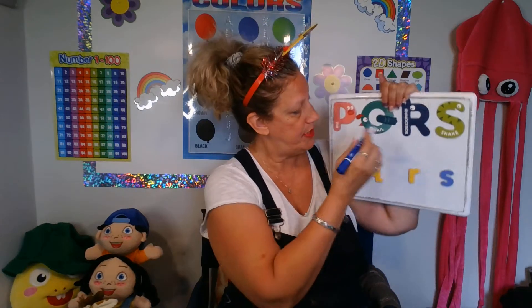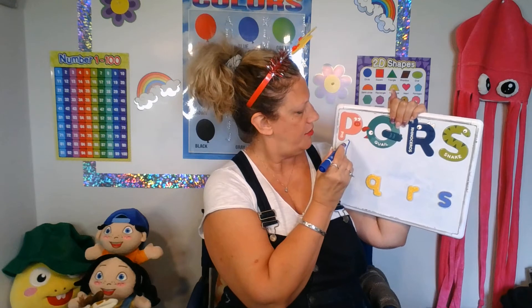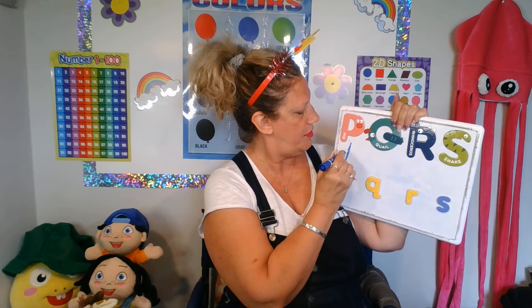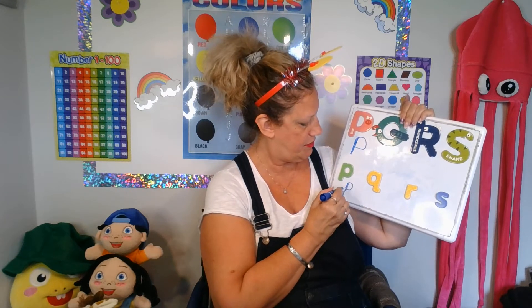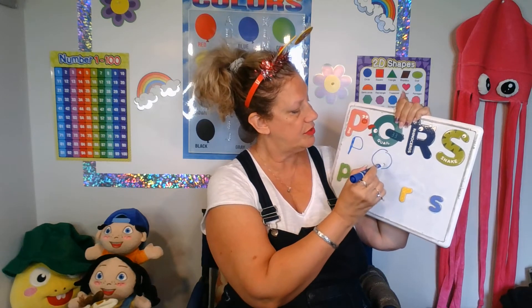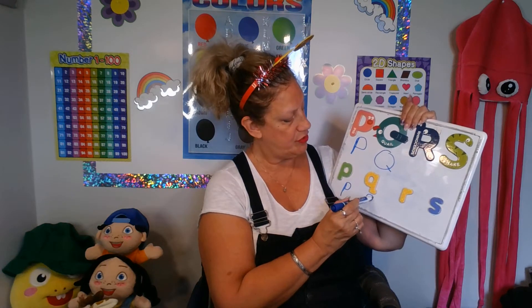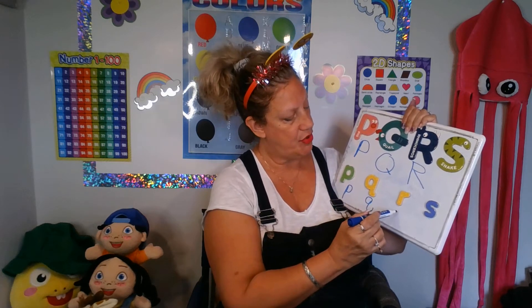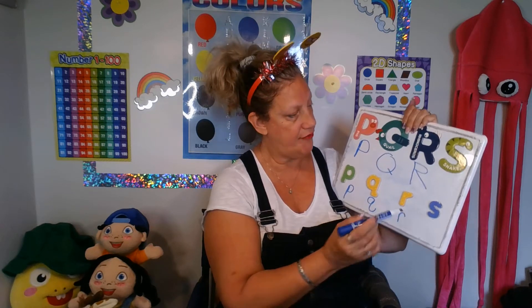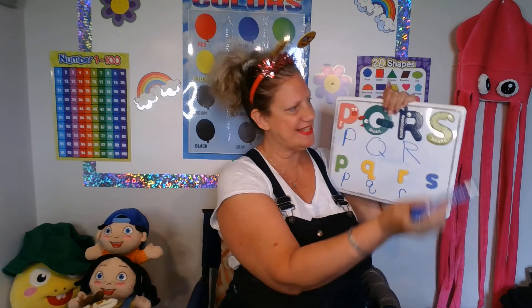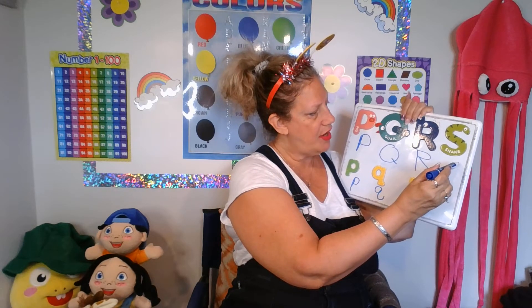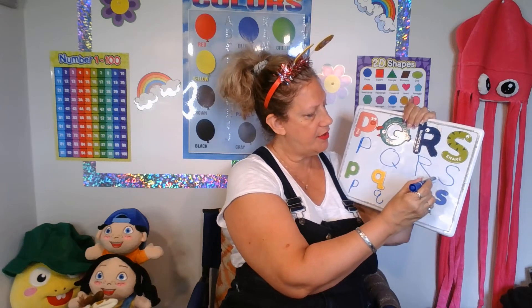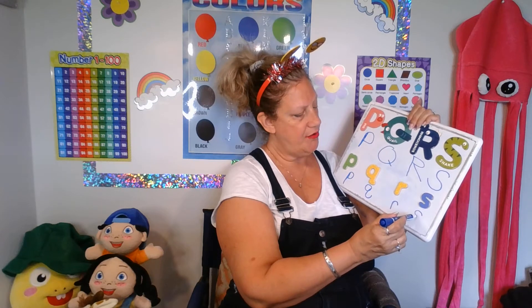Let's review our writing. A big P is a line down, up and around. Small P: line down, up and around. Q: big circle, small line through. Small Q is a circle and a backwards hook. Big R: line down, around, and a kick down. Small R: line down, up and half over. Now an S is very easy — it's like a snake. We go up, around, and around, and back up again.